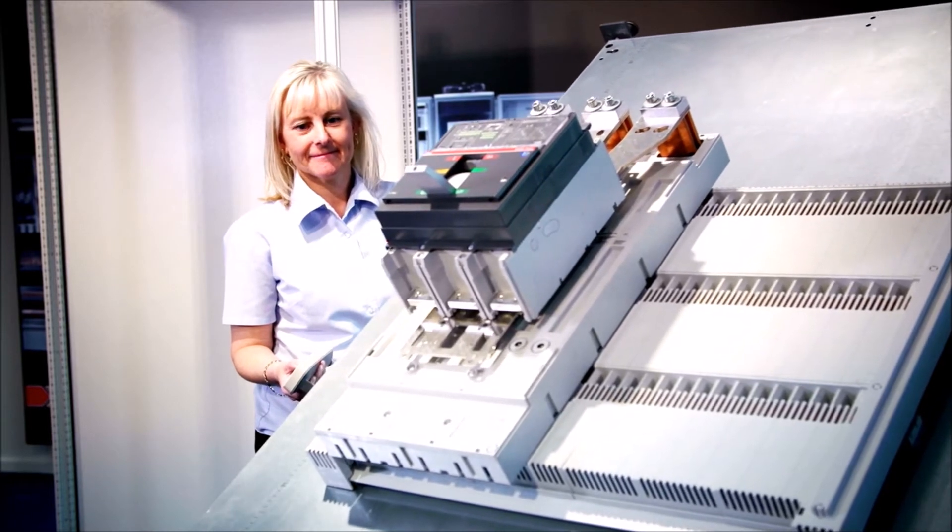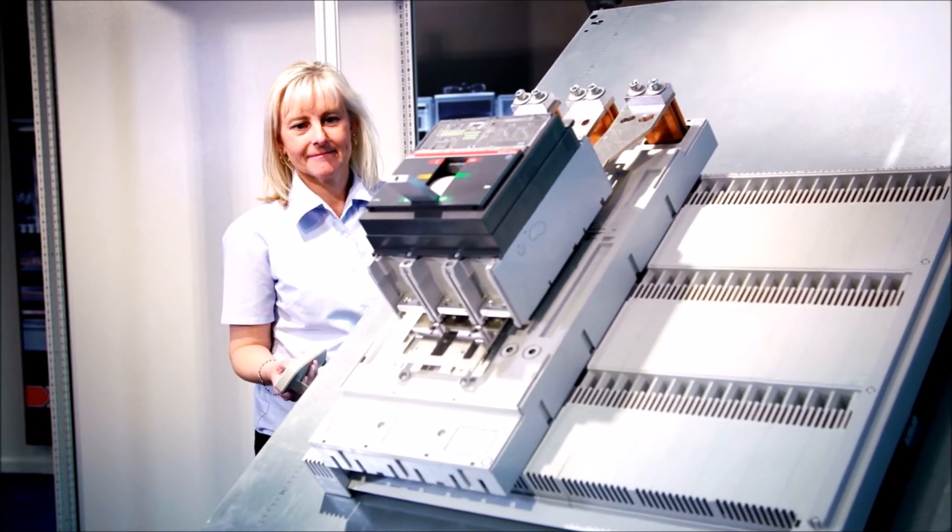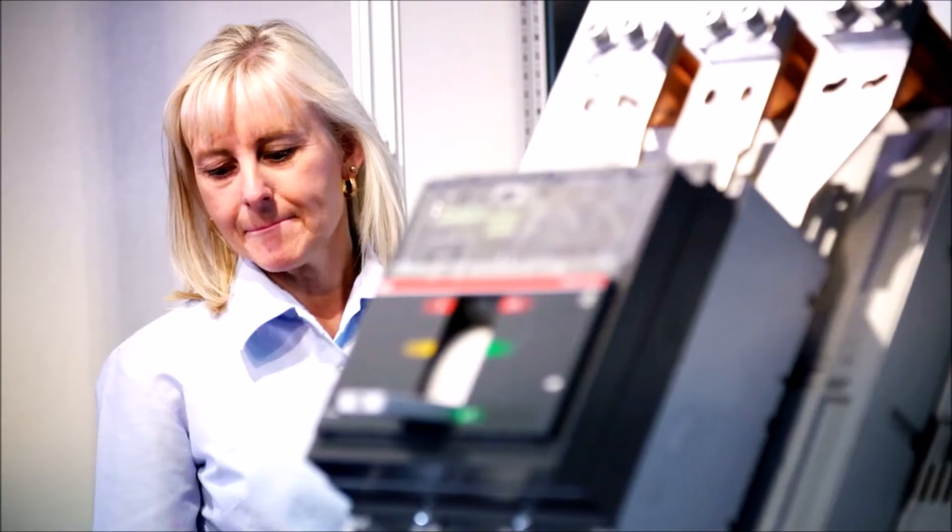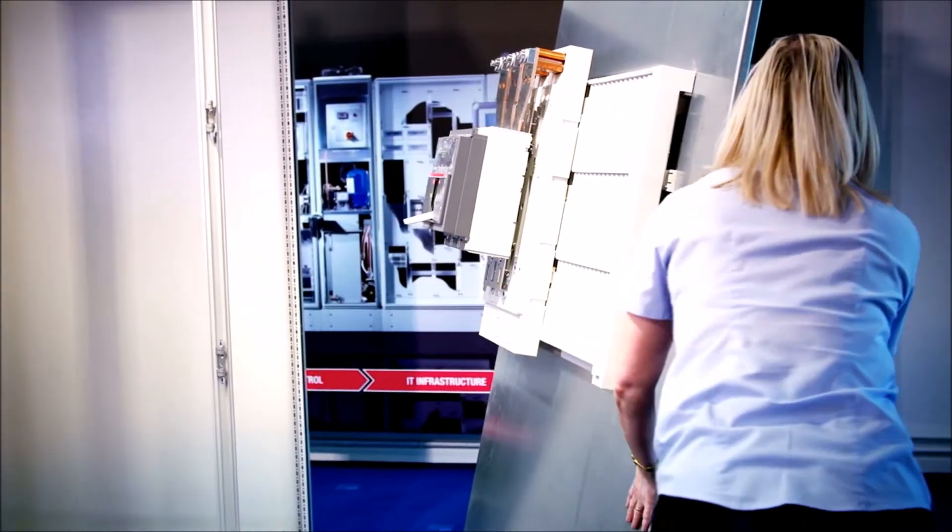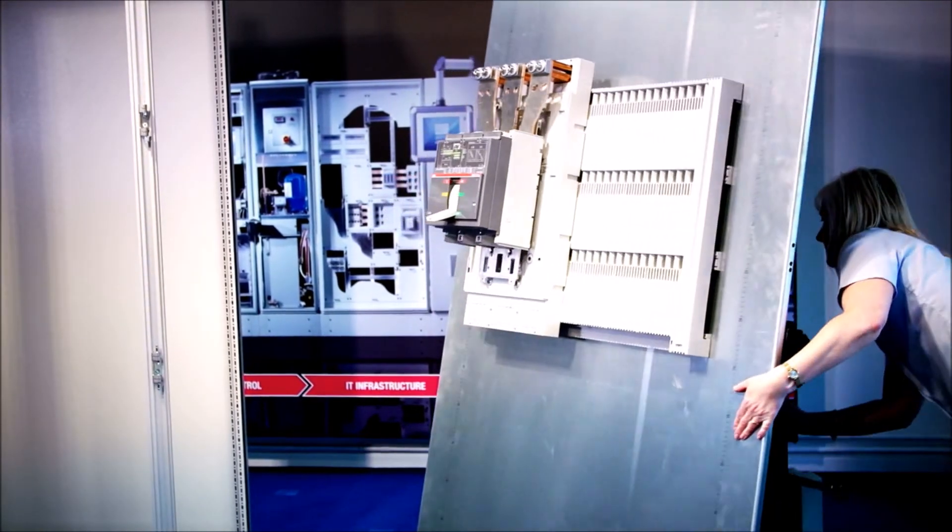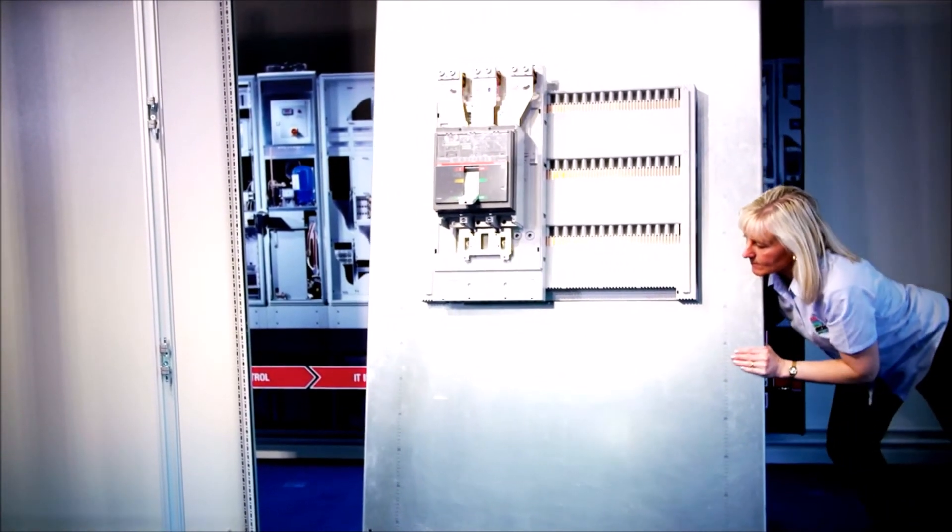The mounting plate you see here has our Rifer Power 185 millimetre bus bar system installed. Together this weighs a total of 150 kilograms, and yet when the castors are unlocked, it can be moved around the workshop with ease and without assistance.